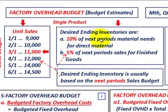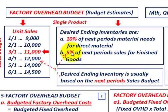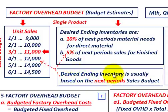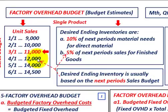The desired ending inventory is based on the next period's sales budget. So we'll be working with the 12,000 April units for that calculation. The beginning inventory for March is based on 5% of March's sales of 11,000 units.